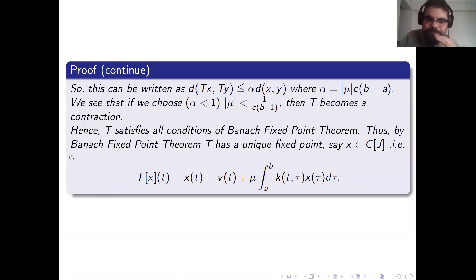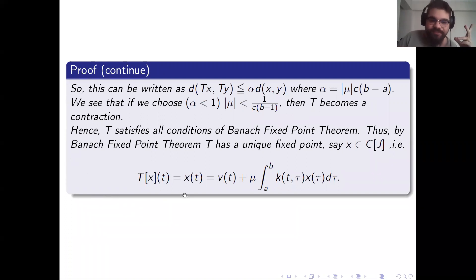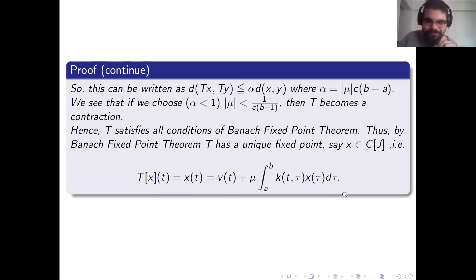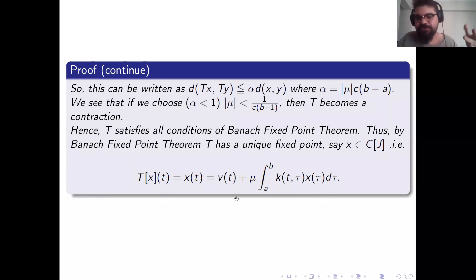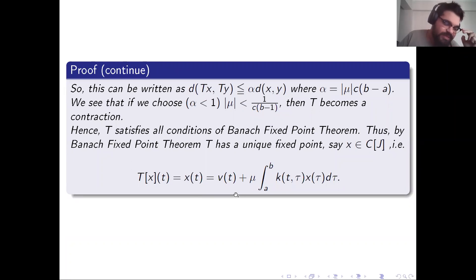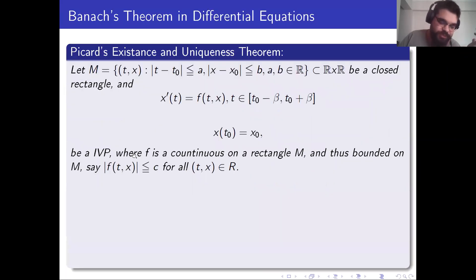Starting with the metric and computing d(Tx, Ty), by simple algebraic manipulations we can show this term is less than α · d(x, y), where α = |μ| · C · (b - a). If we choose μ such that α < 1, then T becomes a contraction. T satisfies all conditions of the Banach fixed point theorem, so T has a unique fixed point x*. Thus the integral equation has a unique solution x, proving existence and uniqueness.